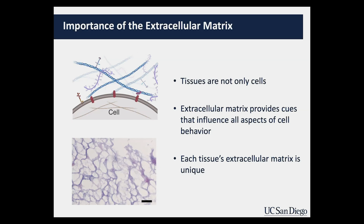For example, cardiac extracellular matrix is different from lung extracellular matrix. This picture here is actually of cardiac extracellular matrix where all the cells have been stripped away, so you can see it has this fibrous architecture — and this is what the cells see and sit inside.